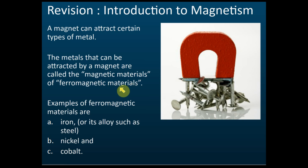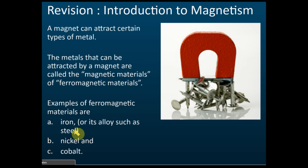There are three types of ferromagnetic materials — you need to memorize this. The first is iron, or the alloy of iron like steel, which is also ferromagnetic. The second is nickel, and the third is cobalt. Remember these three types of ferromagnetic materials.